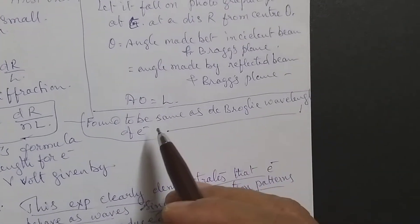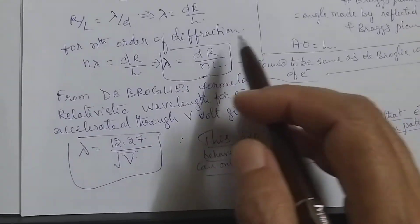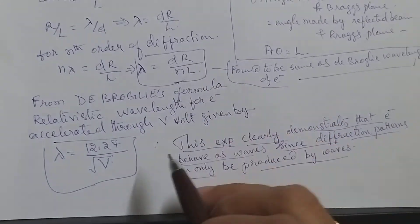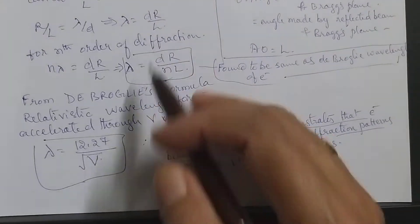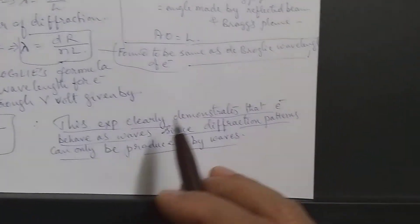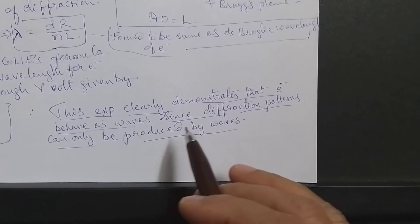This is found to be same as the de Broglie wavelength of electron when you calculate from the experiments. The de Broglie wavelength is of course 12.27 by root of v. These two tally each other, so that is the experimental evidence for saying that electrons are behaving like waves.